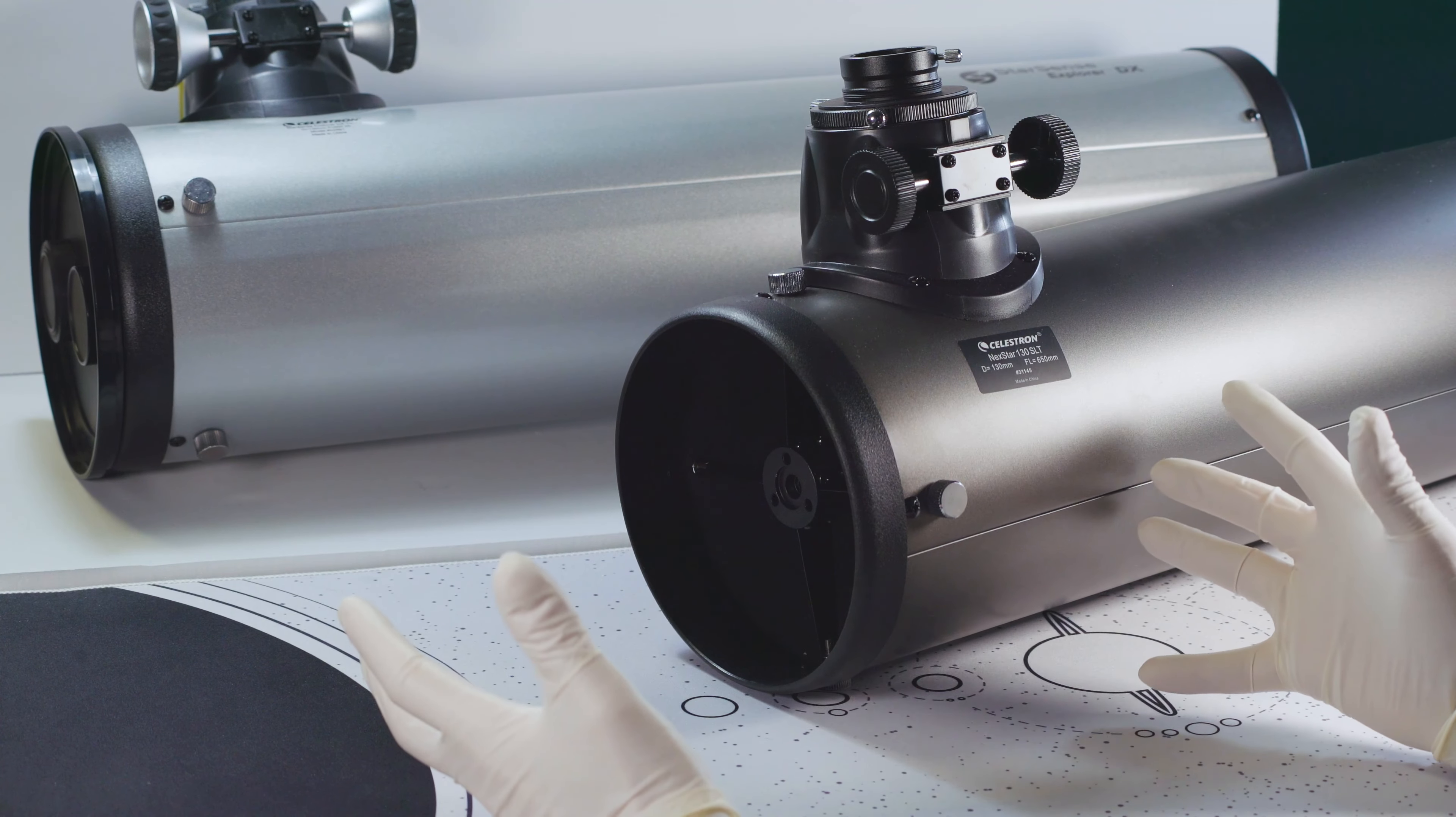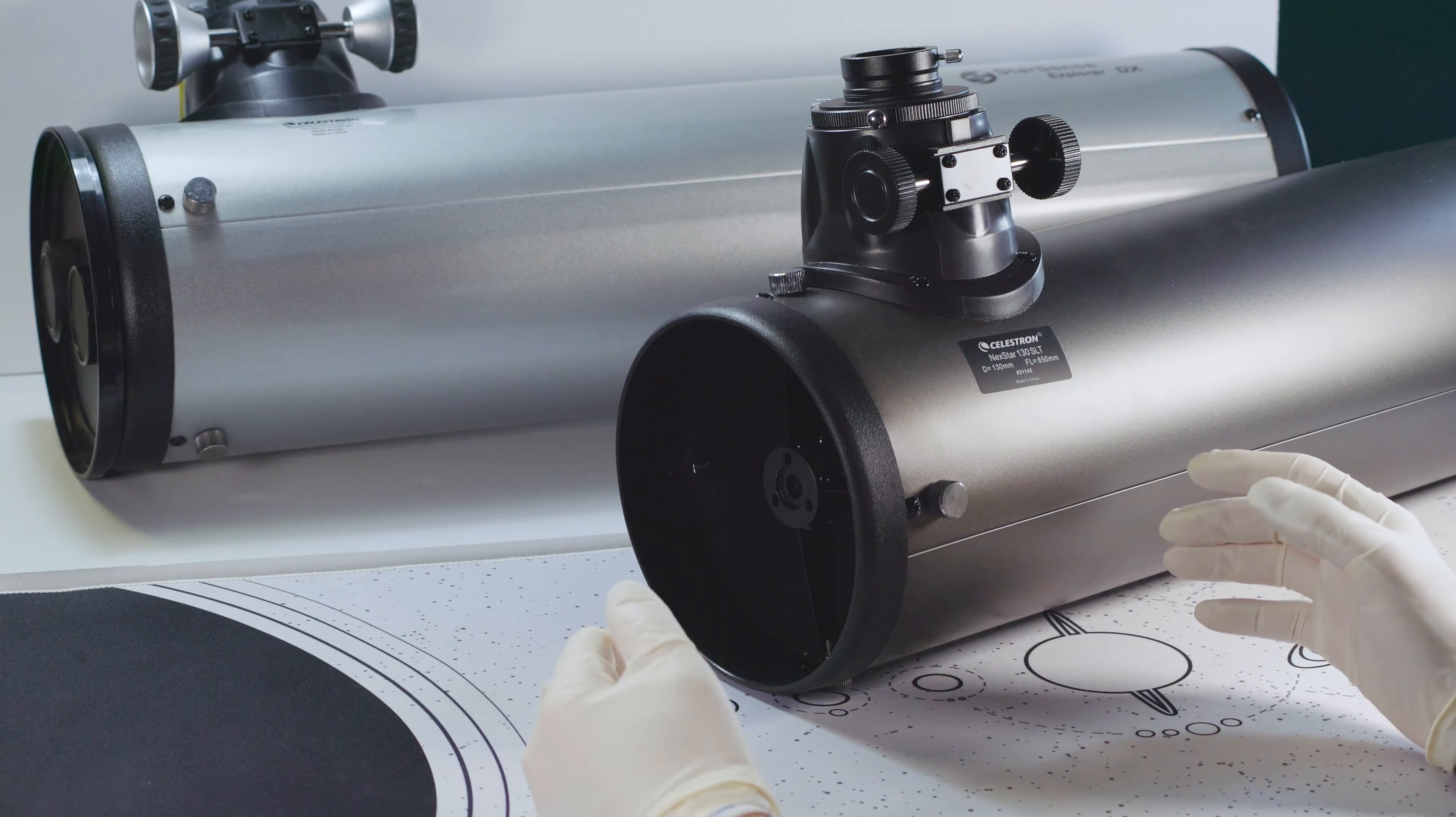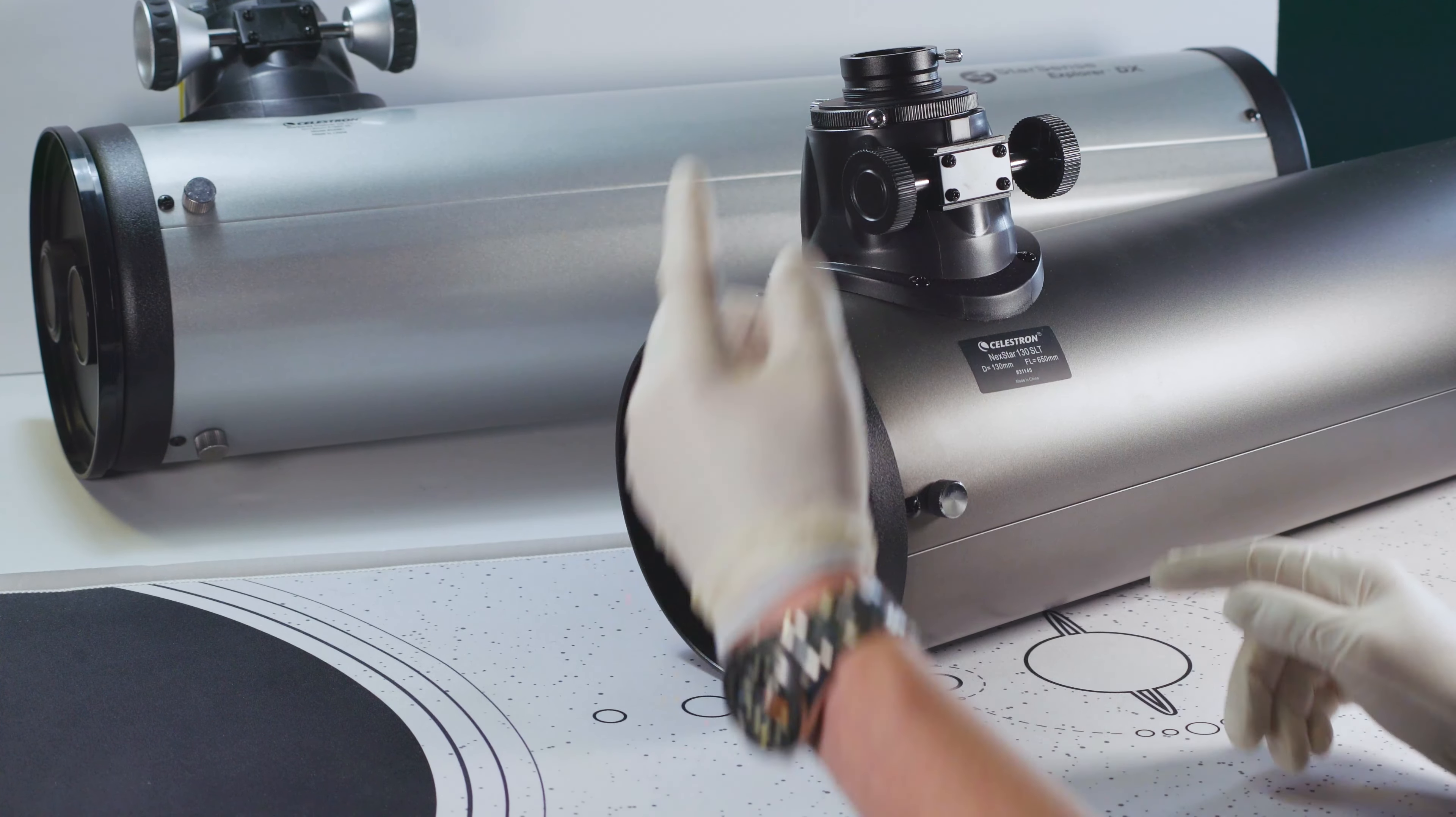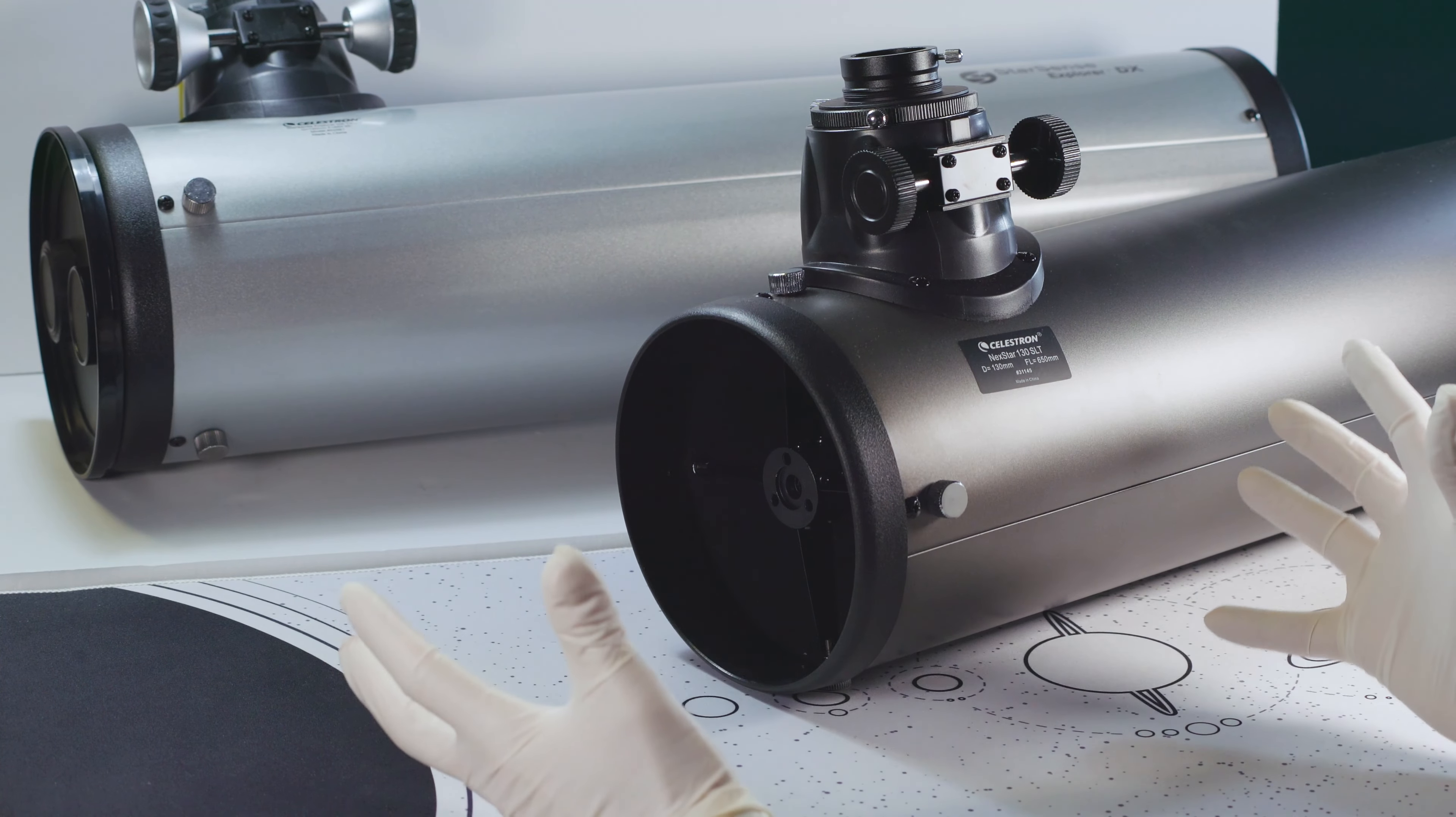Hello there everybody, this is Ed from High Point Scientific bringing you another video in our how-to series. Today we're going to be taking a look at how to install the Apertura collimation knobs for the Celestron 130 SLT and DX-130 telescopes. So grab your kit, grab your scope, and let's get started.